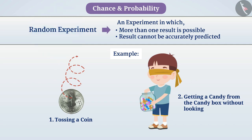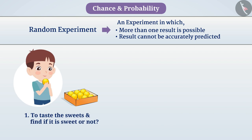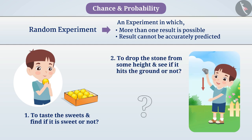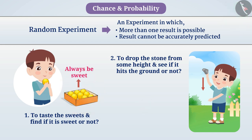Can you tell me if experiments like tasting sweets to find if they are sweet, or dropping a stone from a certain height to see if it hits the ground, are also random experiments? Sweets will always be sweet. Similarly, if anything falls from some height, it definitely comes to the ground. That means we know in advance the result of such experiments. Therefore, we cannot call them random experiments.